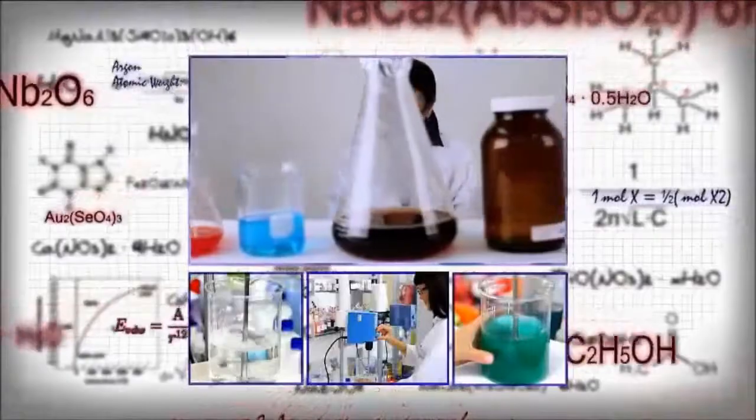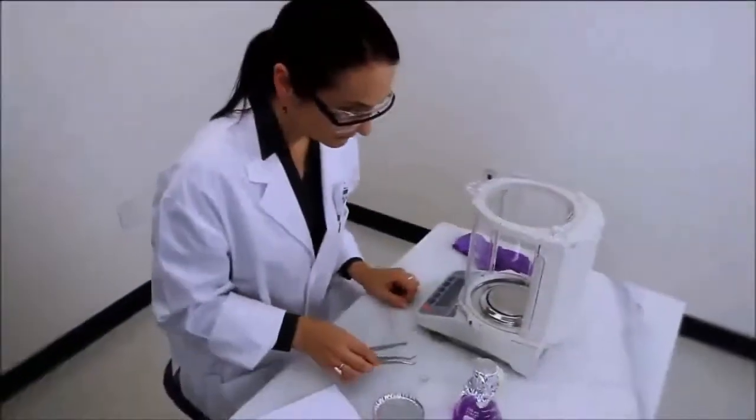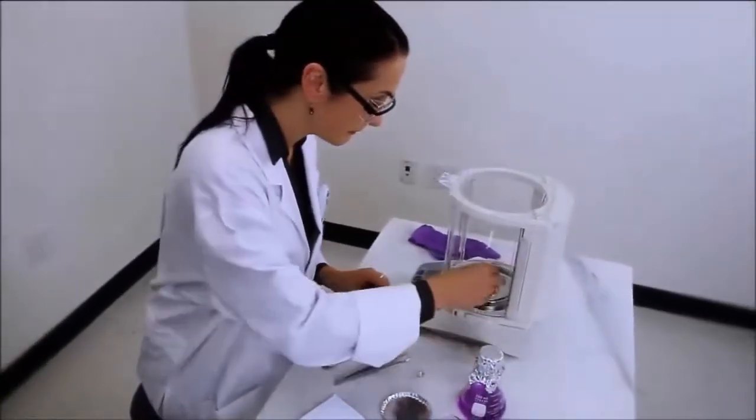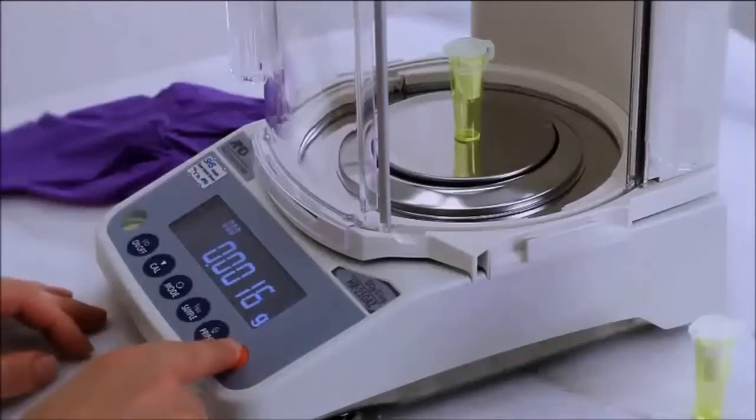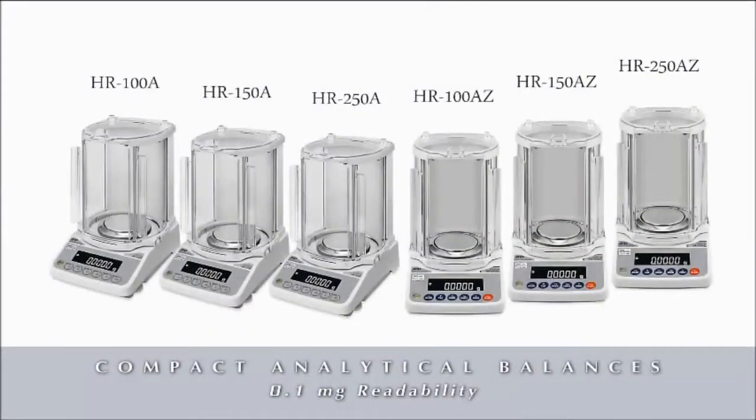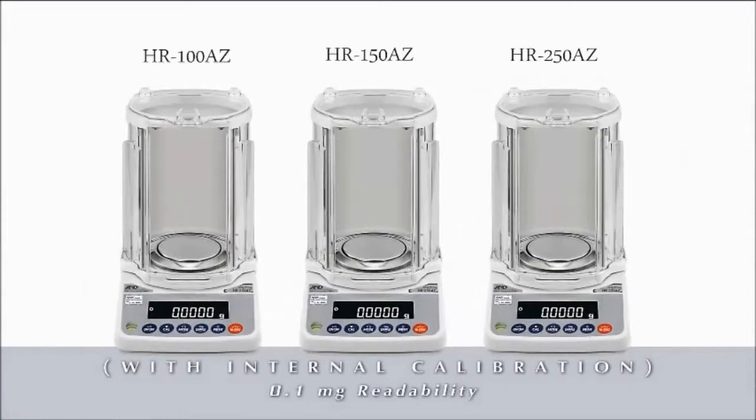Every lab needs a reliable balance. That's why you should get to know the new HRA series of compact analytical balances from A&D. Six models are available in three capacities, all with 0.1 milligram readability. The HRA Z models include internal calibration.